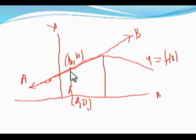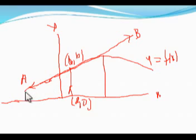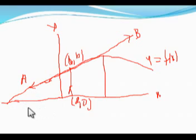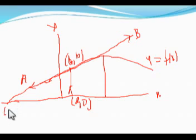We have drawn the tangent at the point (E, B). This touchline at the point (E, B) is called the tangent. The tangent must intersect at some point (E, B).